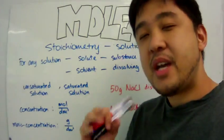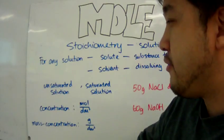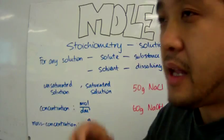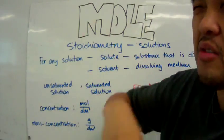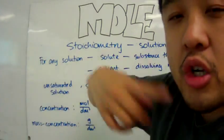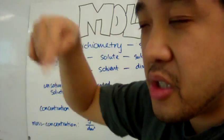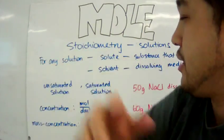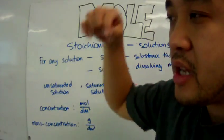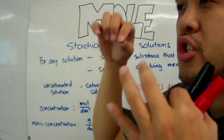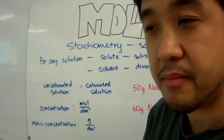For solutions, there are basically two types you need to know about: unsaturated solutions, meaning you can still dissolve more solutes into that solution, and saturated solutions, which are solutions where if you add any more solutes, it will not dissolve any further.